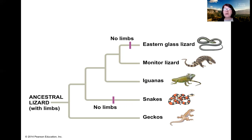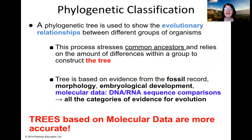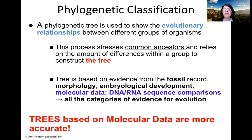These trees are constantly being revised based on new evidence. Most importantly, they rely on molecular data — comparing sequences of DNA, RNA molecules, and protein molecules to determine how closely related organisms are. Phylogenetic classification uses multiple categories of evidence because it is used to show evolutionary relationship. The process stresses common ancestors and relies on the amount of differences within the group, inferred from the fossil record, morphology, embryological development, and molecular data.